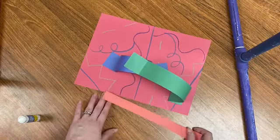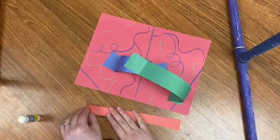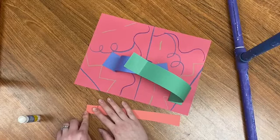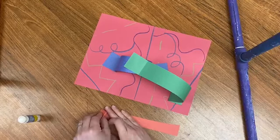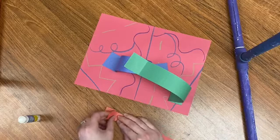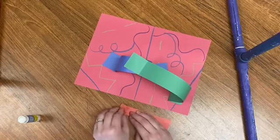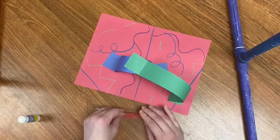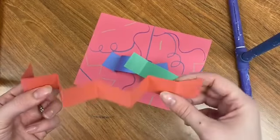If you get pretty good at that, you could try a zigzag. So a zigzag, I'm going to fold just like I was with his feet, but then I'm going to flip and fold. Flip and fold. Flip and fold. Flip. And now I have a zigzag line.